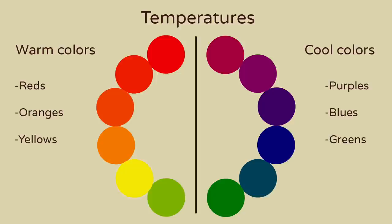When artists talk about color temperatures, they mean either warm colors — which are reds, oranges, and yellows — or cool colors — which are purples, blues, and greens. Opposite temperatures create visual contrast and have different psychological effects.